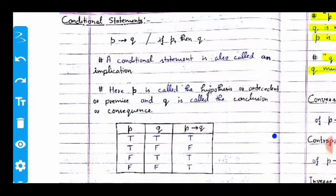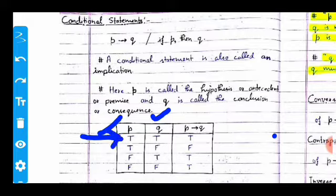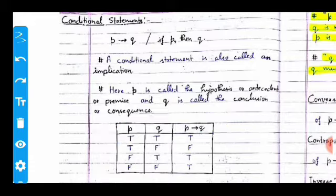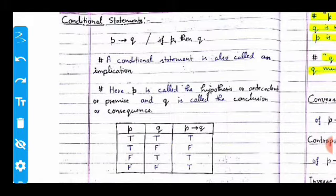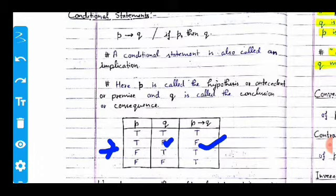Here p and q are two different statements or values. When the value of p is true and the value of q is true, then p implies q equals true. When the value of p is true and the value of q is false, then it produces false.